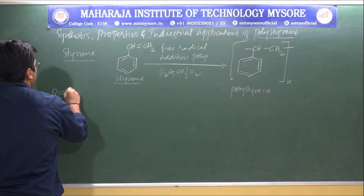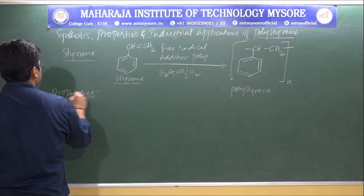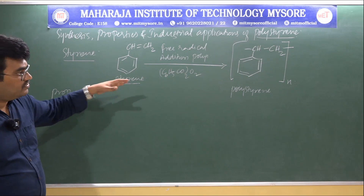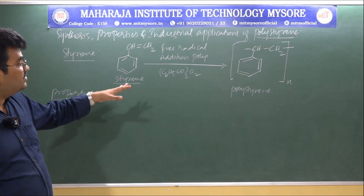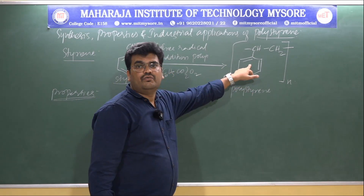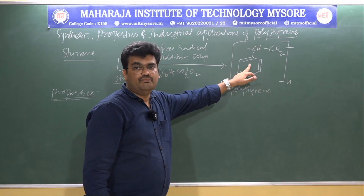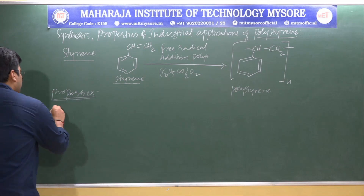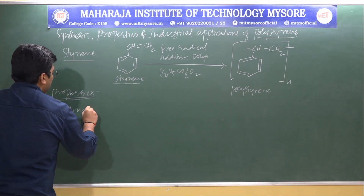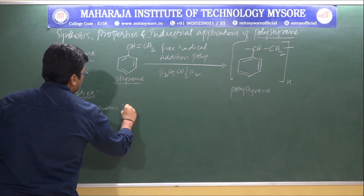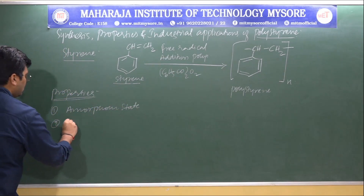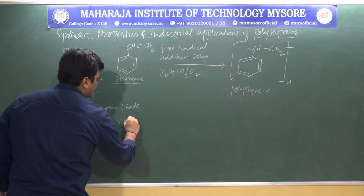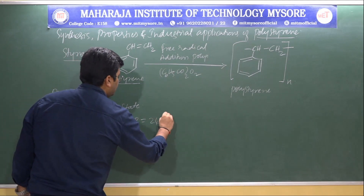Coming to the properties of polystyrene: first, it exists in an amorphous state because of the presence of bulky phenyl groups, which make chain packing more difficult. Second, polystyrene is non-polar in nature, with a melting point of 240°C.